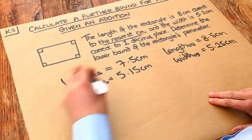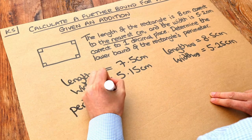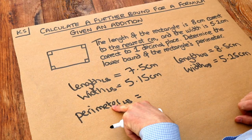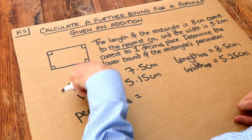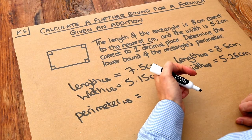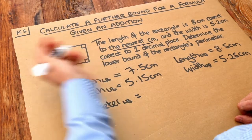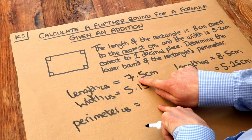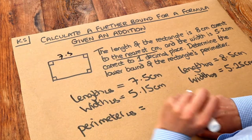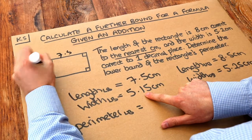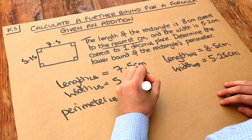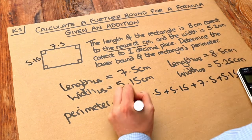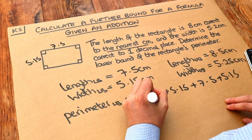So we want the lower bound of the perimeter. To get the smallest possible perimeter, we add the smallest possible values for each side. Adding small numbers together gives the smallest possible result. The smallest possible length is 7.5 and the smallest possible width is 5.15. So we calculate: 7.5 + 5.15 + 7.5 + 5.15, which gives 25.3 centimetres.